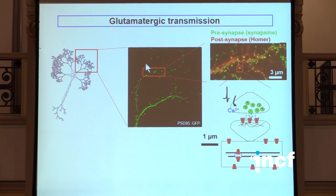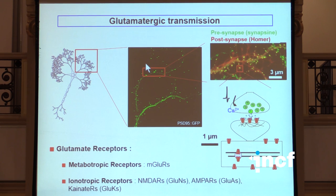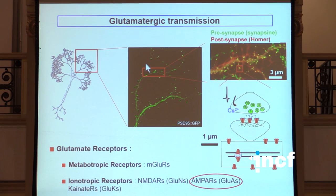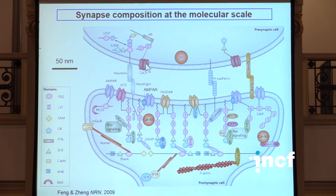We are going to concentrate on the post-synaptic side of these synapses, trying to understand what's the organisation of these receptors and how the dynamic organisation actually has an impact on synapse function. So these glutamatergic synapses harbour a whole variety of molecules and in particular a whole variety of receptors. We are going to concentrate just on one subtype of receptor which are called the AMPA receptors, which are cationic ion channels opened by binding of glutamate, and those are really the receptors that mediate all excitatory basal synaptic transmission.